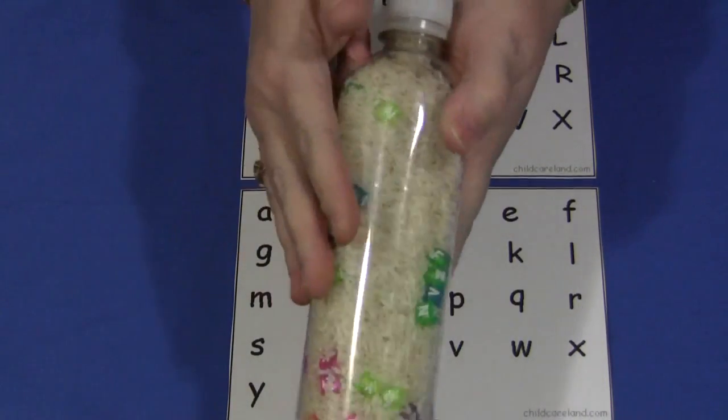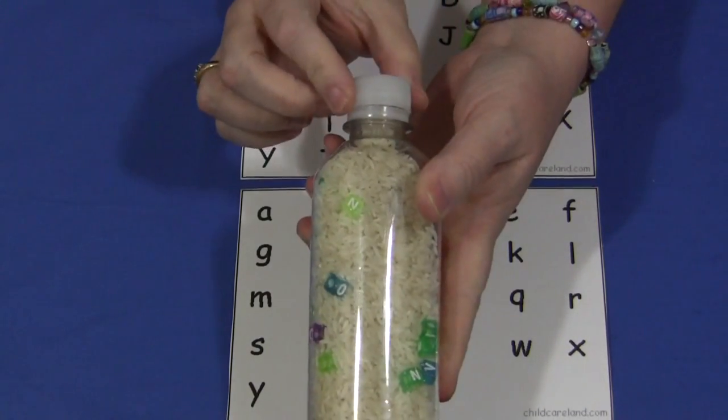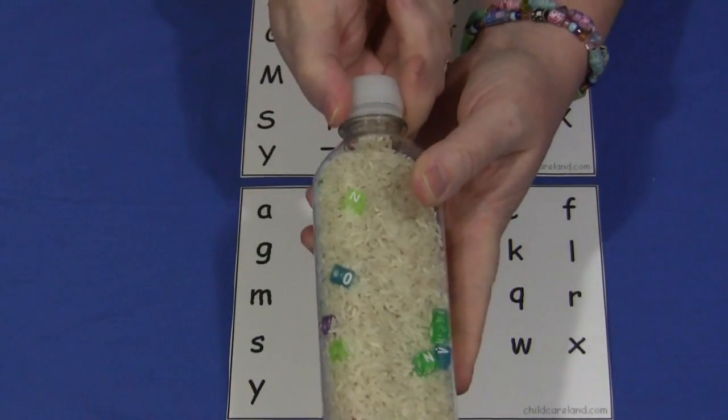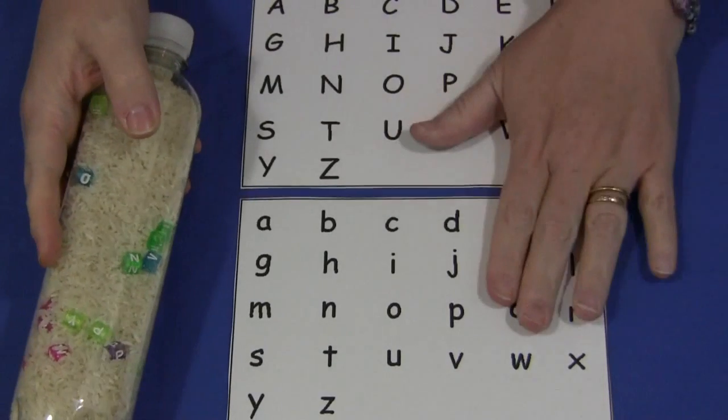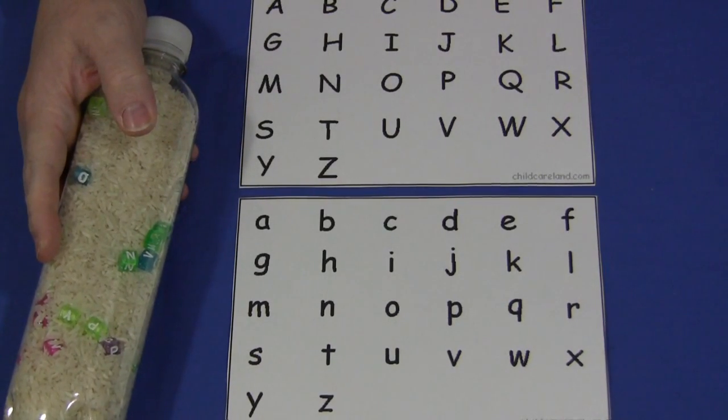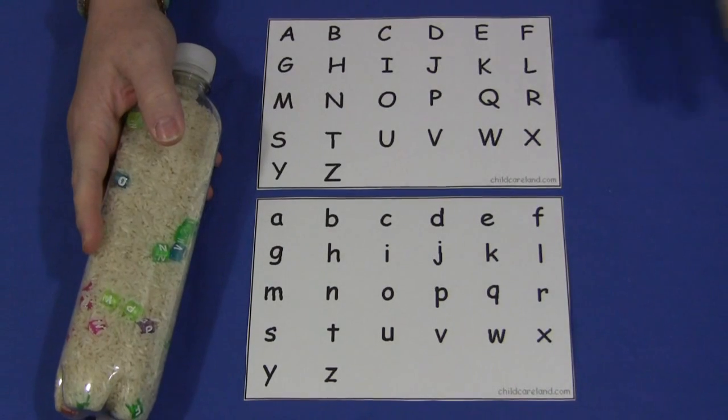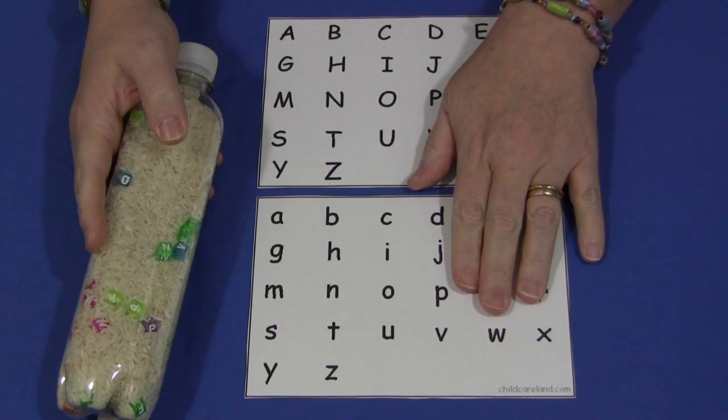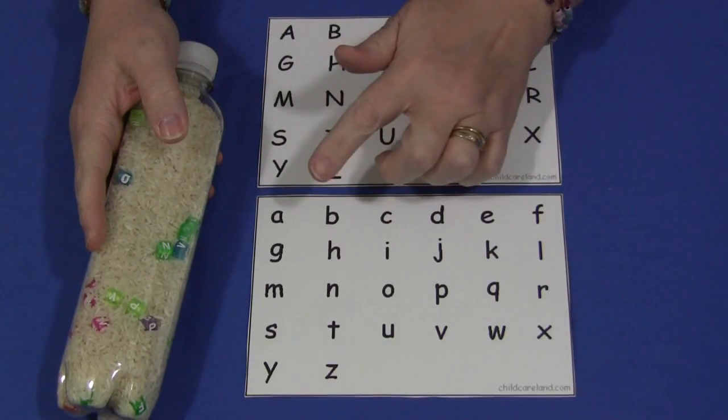After the beads were put in, I shook it up and then sealed the cap. To go along with this activity, I've made two letter sheets that children can use to mark off letters as they find them. This can be done by circling the letter.